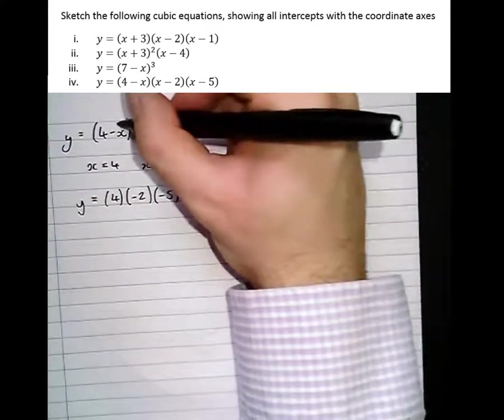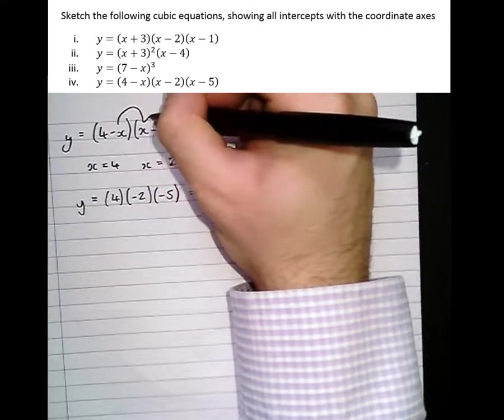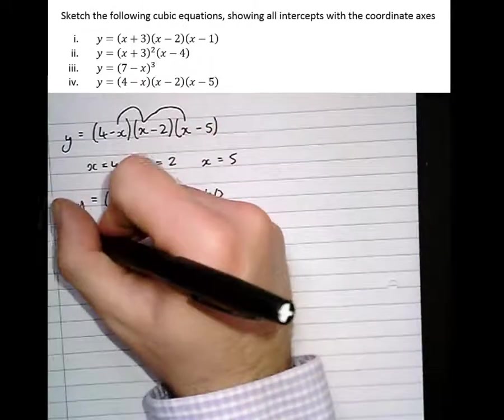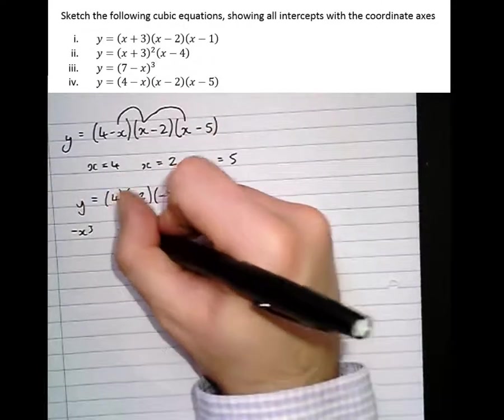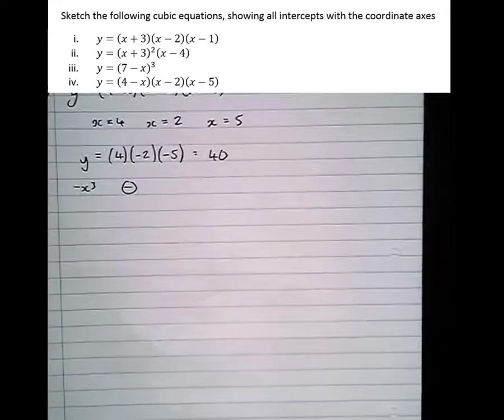And then multiplying the X terms together, X minus X times X is X squared, times another X is minus X cubed. So it's another negative graph, so a graph that starts at the top left. Drawing the axis.